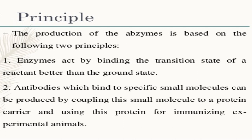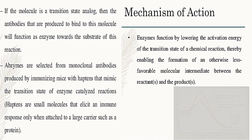The production of abzymes is based on two principles: first, enzymes act by binding the transition state of a reactant better than the ground state; second, antibodies which bind to specific small molecules can be produced by coupling this small molecule to a protein carrier and using this protein for immunizing experimental animals. If the molecule is a transition state analog, the antibodies produced will function as enzymes towards the substrate of that reaction.